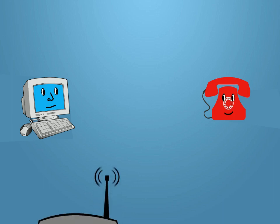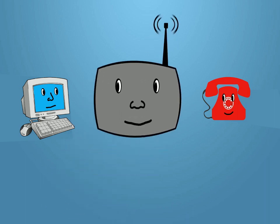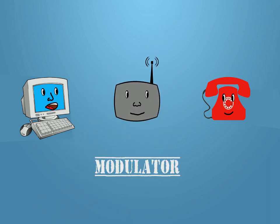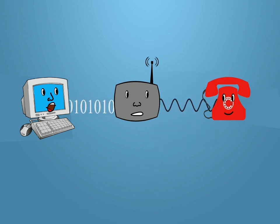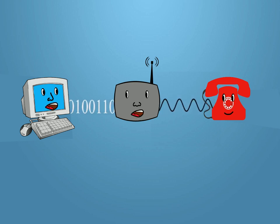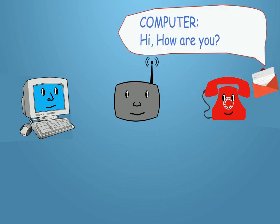So obviously what we want is a translator — a black box named a modulator, which converts the binary language into analog signals. With this, part of the problem has been solved. Now the messages can successfully be sent from a computer to a telephone with the help of the modulator.